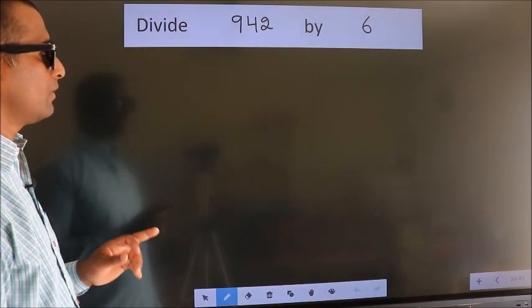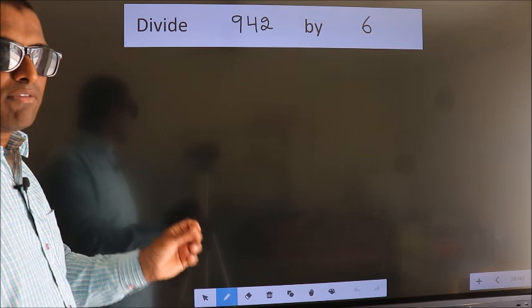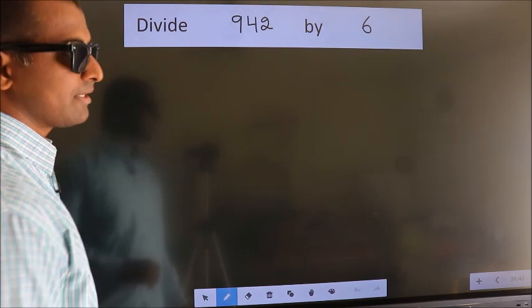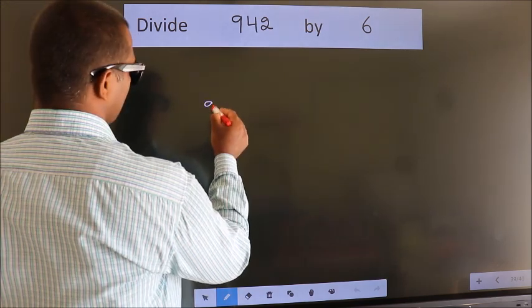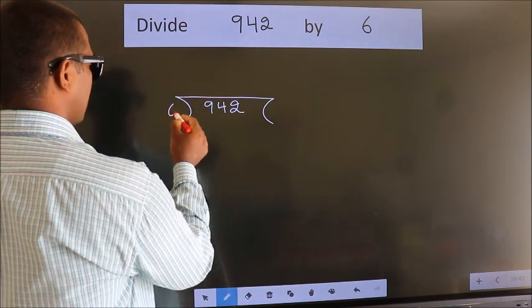Divide 9.42 by 6. To do this division, we should frame it in this way. 9.42 here, 6 here.